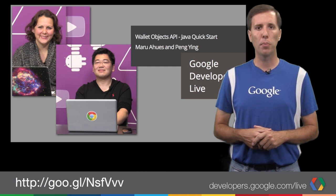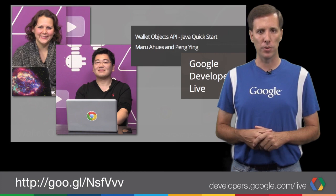And back in Mountain View, wallet wizard Pong Ying joined up with Maru Bauza for a deep dive into the Wallet Objects API Java Quick Start sample. The video highlights authorizing access using the Save Wallet API, as well as enabling instant signup and linking from the Wallet app.